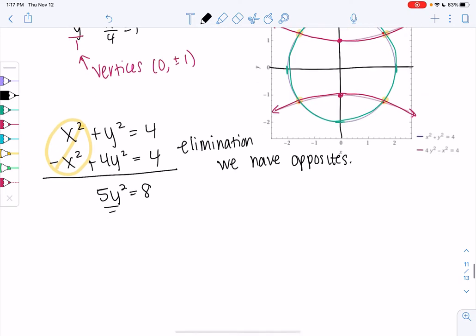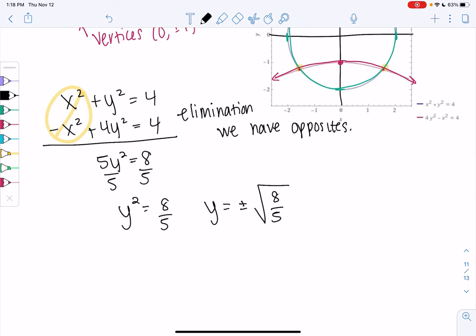So we divide by 5. We get y squared equals 8 fifths. So y equals plus or minus square root of 8 over square root of 5. We'll simplify this in a little. So that means we already have two solutions.